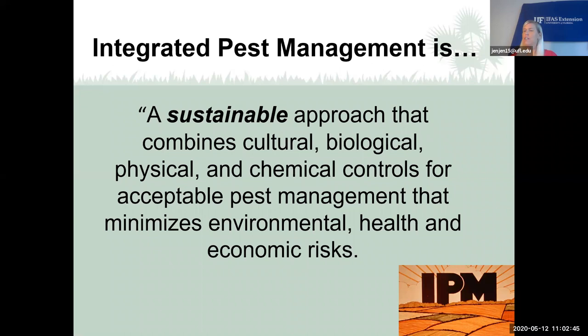We want to control pests to save our vegetable garden and landscape from damage, but we want to do it in a safe manner. We want to use the least toxic ways to control pests first. If that doesn't work, we slowly move up to different measures.